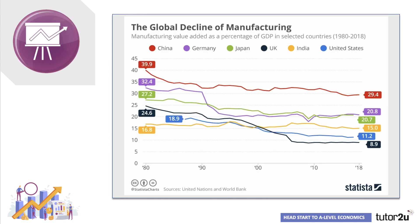Part of the reason for structural unemployment are changes in the economy, including something called de-industrialisation — in other words, the decline in manufacturing output as a share of a country's national income. That's happened for many countries, including the UK. Both emerging and advanced countries have seen a fall of their manufacturing sectors, becoming less important for national incomes and employment.